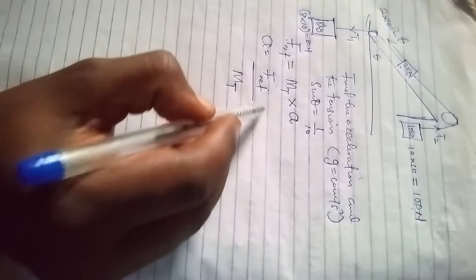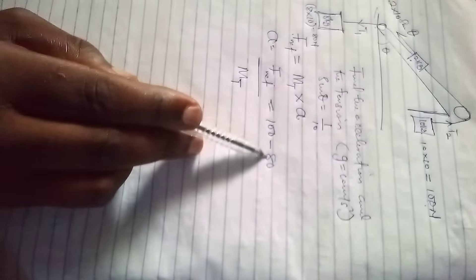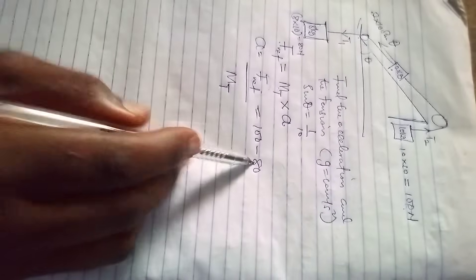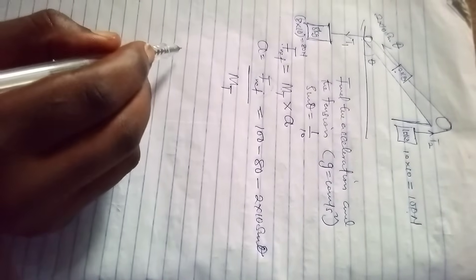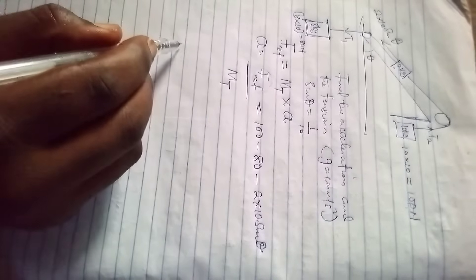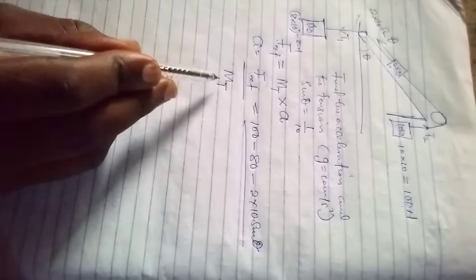So the net force will now be 100 minus 80, then we have this two force bringing it down, opposing this 100 newton. It's also opposing this 80 newton. So the combination of this force is actually opposing this one. The net force will be 100 minus 80, minus 2 times 10 sine theta.